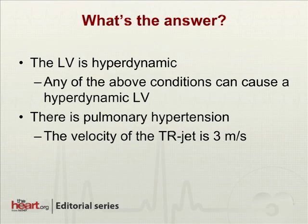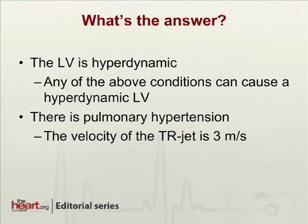What do we see? The left ventricle is clearly hyperdynamic and tachycardic, and any of the above conditions could cause such a scenario. We can also infer the presence of pulmonary hypertension. Even though I have not given a mean right atrial pressure or shown images of the inferior vena cava, we know that the peak systolic pressure in the pulmonary artery is 36 mmHg plus the mean right atrial pressure. So even if the right atrial pressure is normal, we have at least mild to moderate pulmonary hypertension.